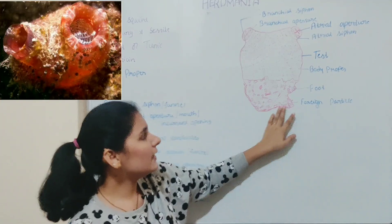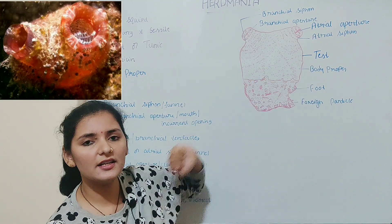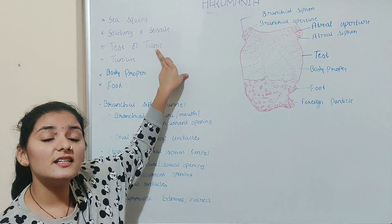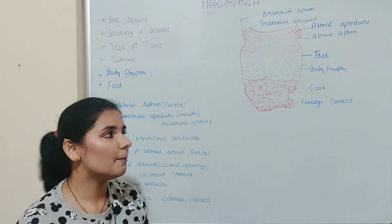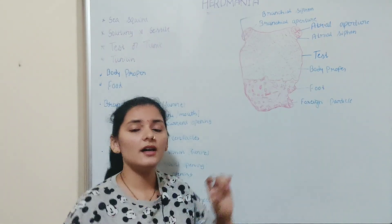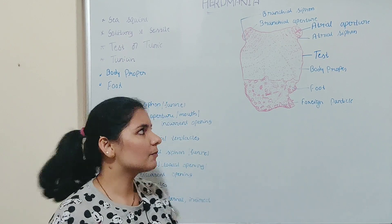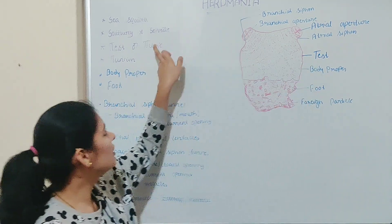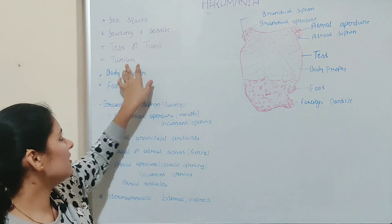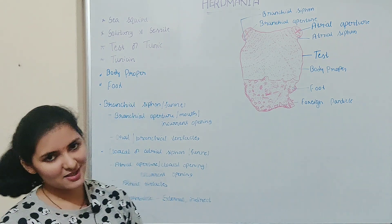The body of Herdmania is covered by a tough leathery gelatinous covering called the test or tunic. This test or tunic layer is produced by the underlying epidermis — just below this test layer a layer of epidermis is present which produces it. The test or tunic layer is made up of a matrix called tunic, which is similar to that of cellulose.